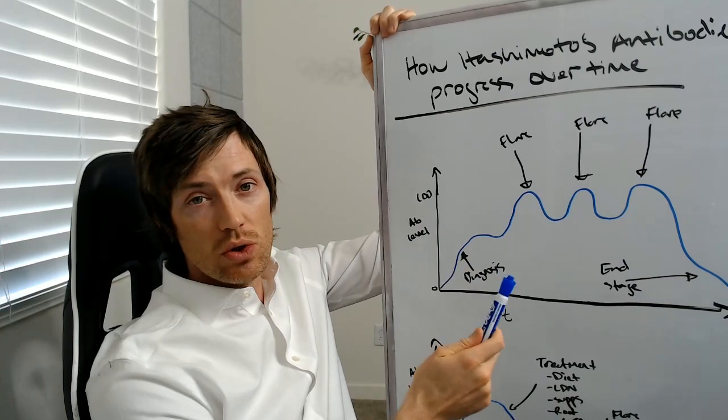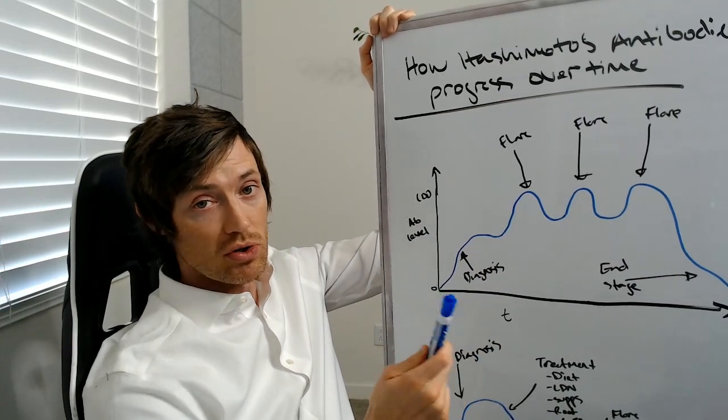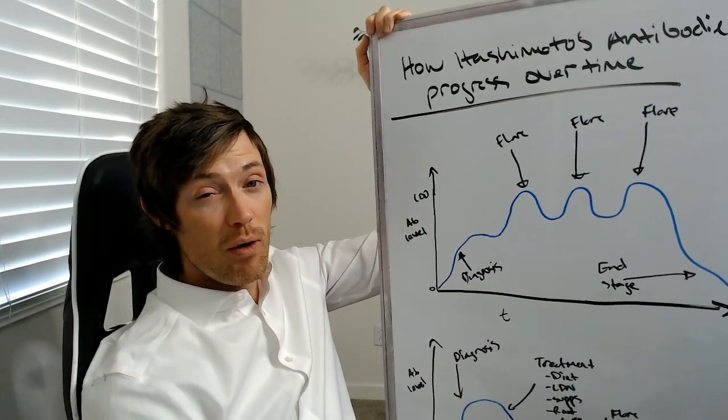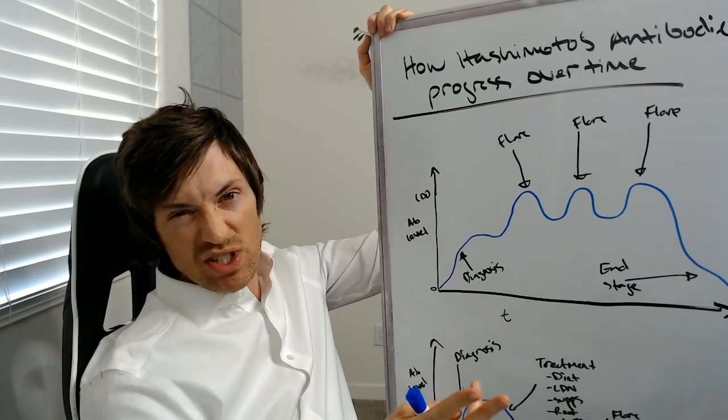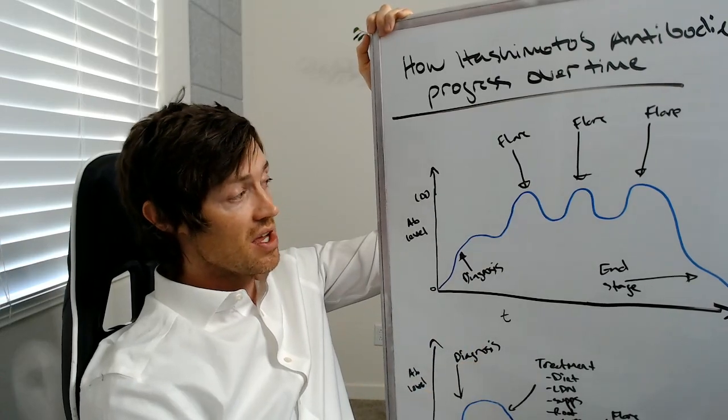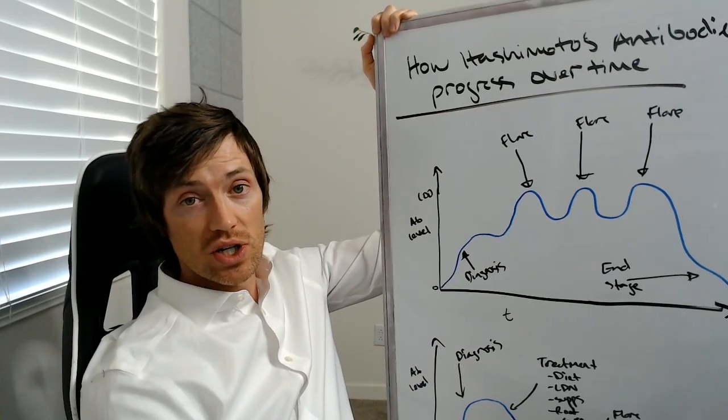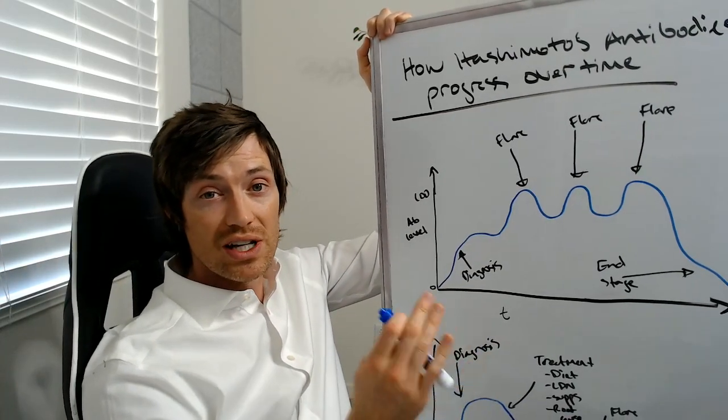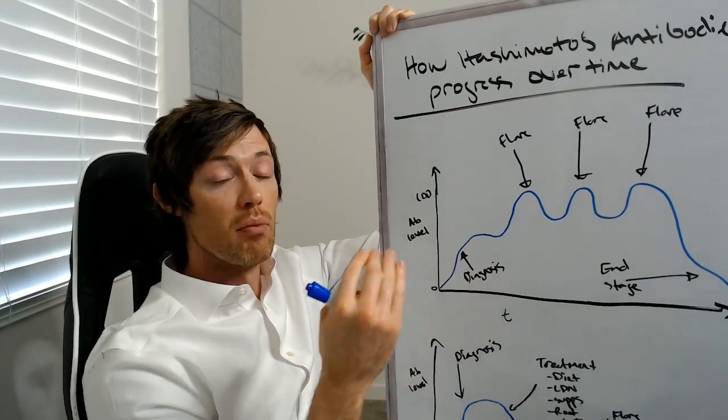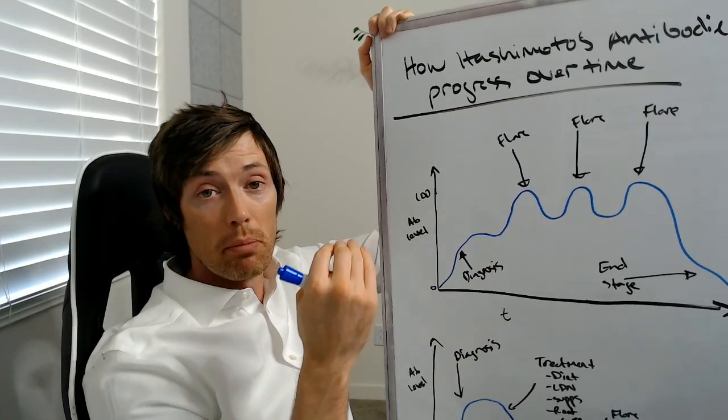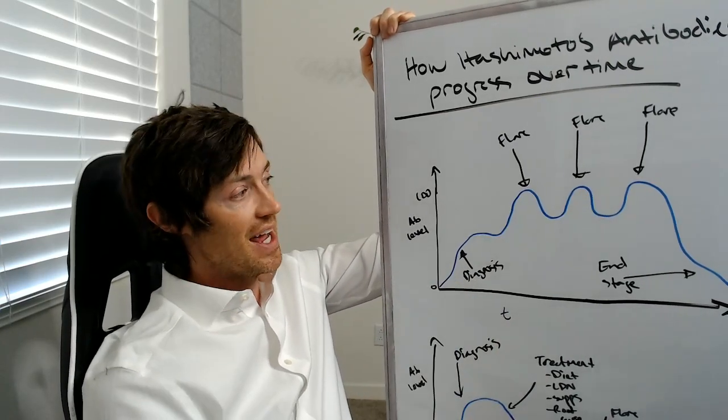Now the antibodies we're going to be talking about include thyroglobulin antibody and thyroid peroxidase antibodies. These are predominantly the two antibodies associated with Hashimoto's thyroiditis. Now you do not want these antibodies to be elevated and high in your body.